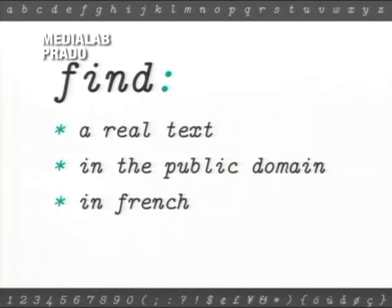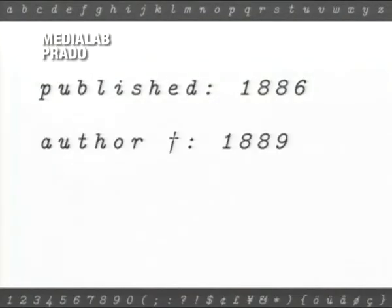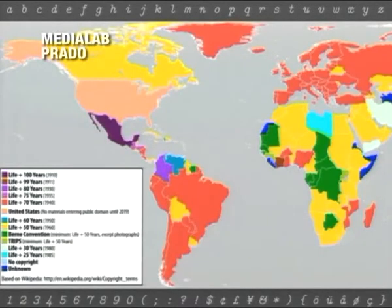Our decisions were: a real text, a real narrative, in the public domain of course so the book can be freely distributable, and it had to be in French because language influences the texture. We found the book 'L'Ève future,' a pre-science-fiction novel from the 19th century — the main character is Thomas Edison. The story influenced later works like Metropolis and Blade Runner, featuring an artificial mechanical woman. The author died more than 100 years ago, so it is in the public domain in most countries.